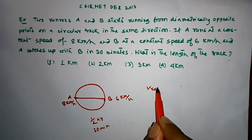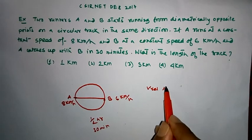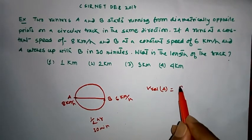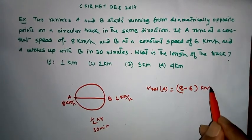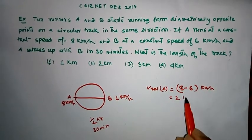Therefore, the relative velocity of A will be 8 minus 6 km per hour, that is 2 km per hour.